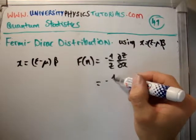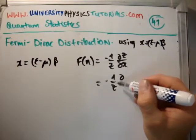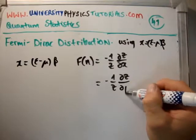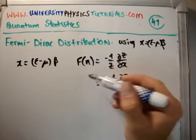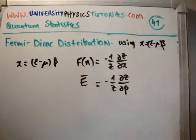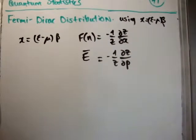Of course there are similar expressions for the average energy, which is del z del beta. So all I'm going to do here is apply this to the Fermi-Dirac distribution and derive it in a couple of lines.